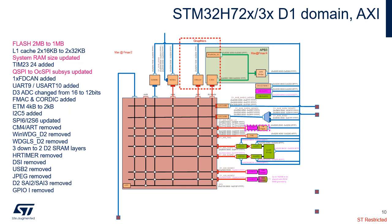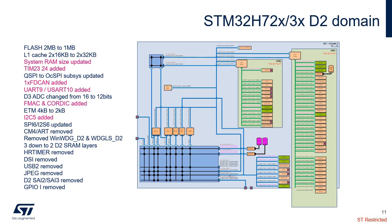Two slave ports of the AXI matrix are used for OctoSPI instead of one for the QuadSPI on STM32H7475 devices. On crypto STM32H7-3X devices, the OctoSPI is connected to AXI through the on-the-fly decryption (OTF-DEC), which can be activated or not. In D2 domain, two 32-bit timers, one FD-CAN, and one I2C have been added on APB1 bus. One USART and one UART have been added to APB2 bus. The two accelerators, CORDIC and FMAC, and the PSSI have been added to the AHB2 bus.